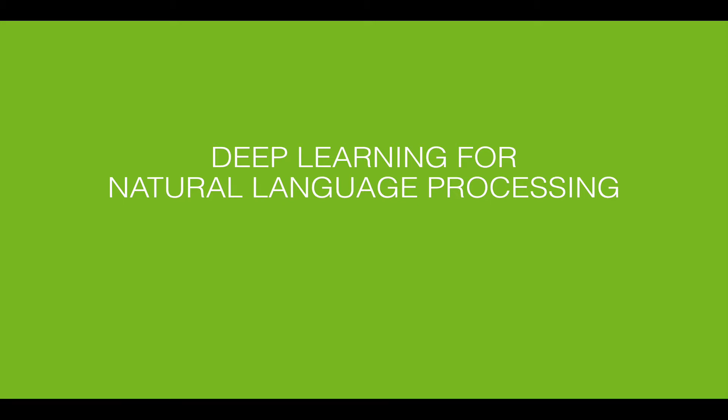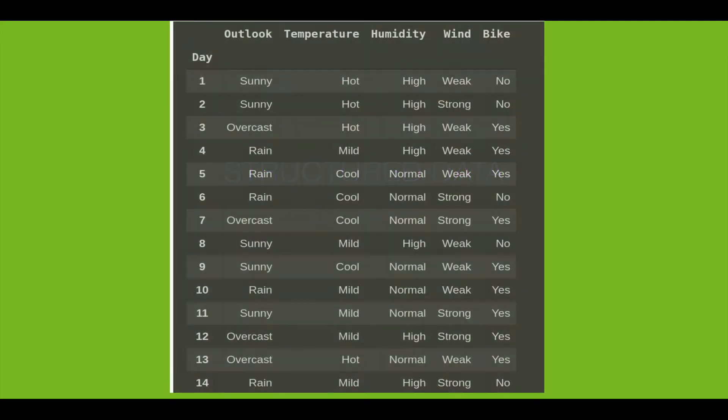So far when we've been looking at deep learning we've been dealing with structured data, meaning things that look like tables, comma separated values. We've originally looked at something like this, there were nice columns: outlook, temperature, humidity, wind, and bike, and each of those columns had a particular small set of potential values.